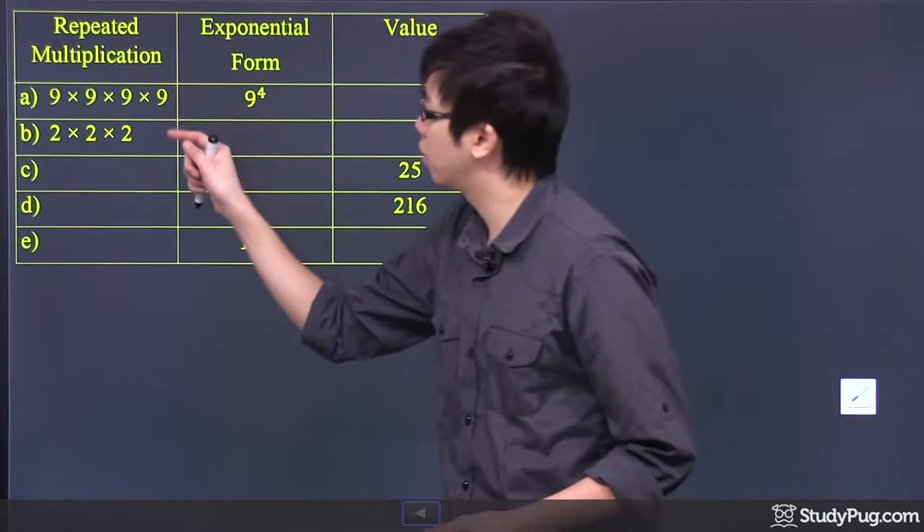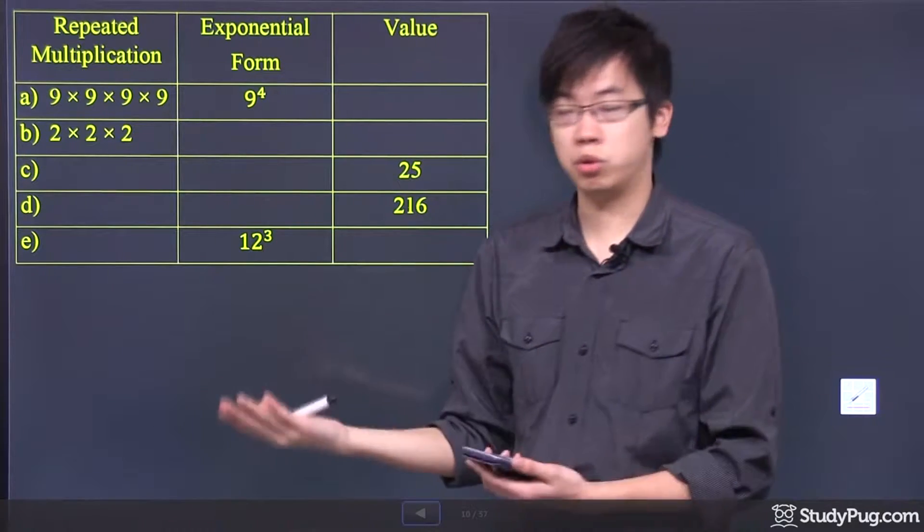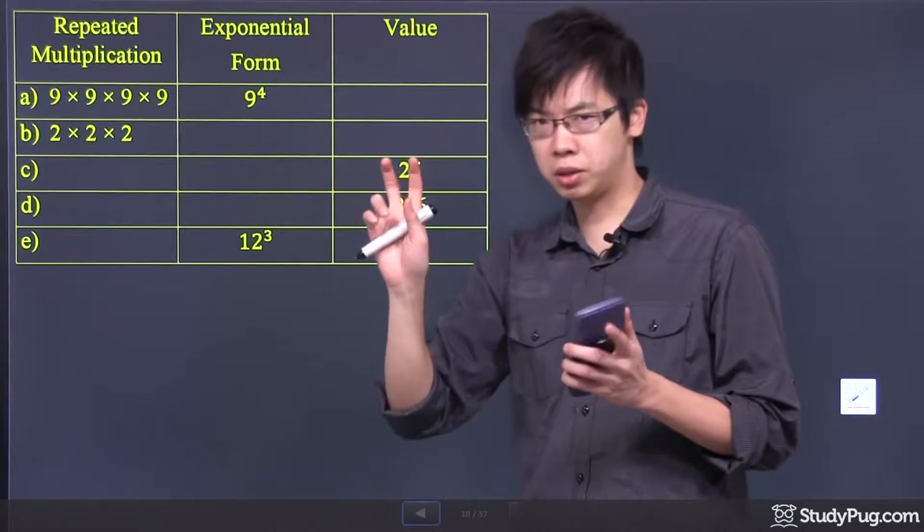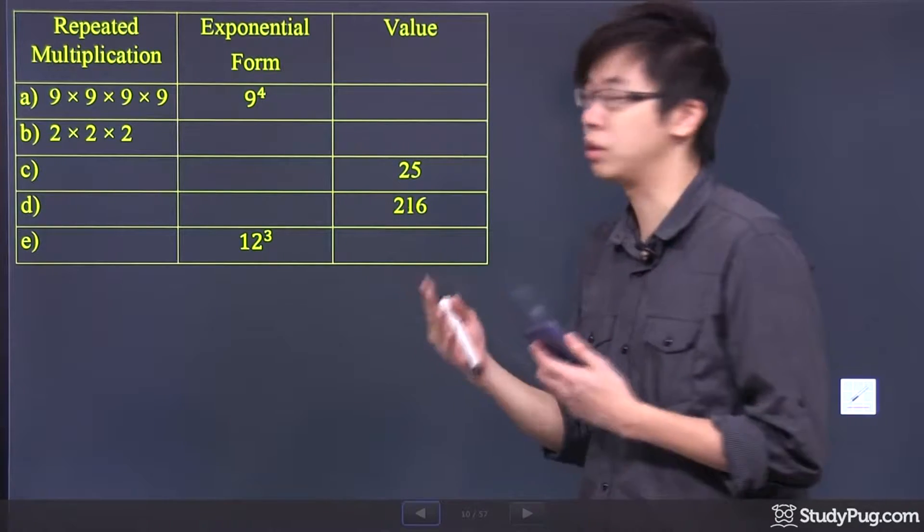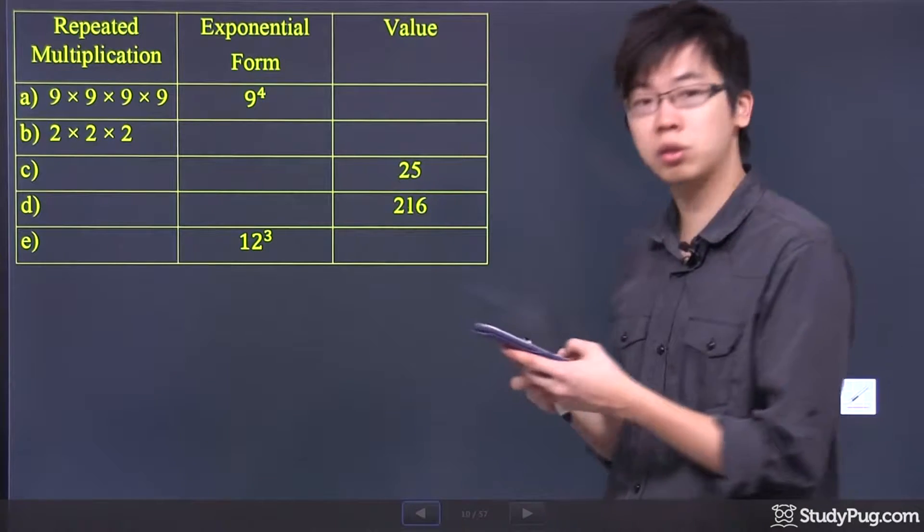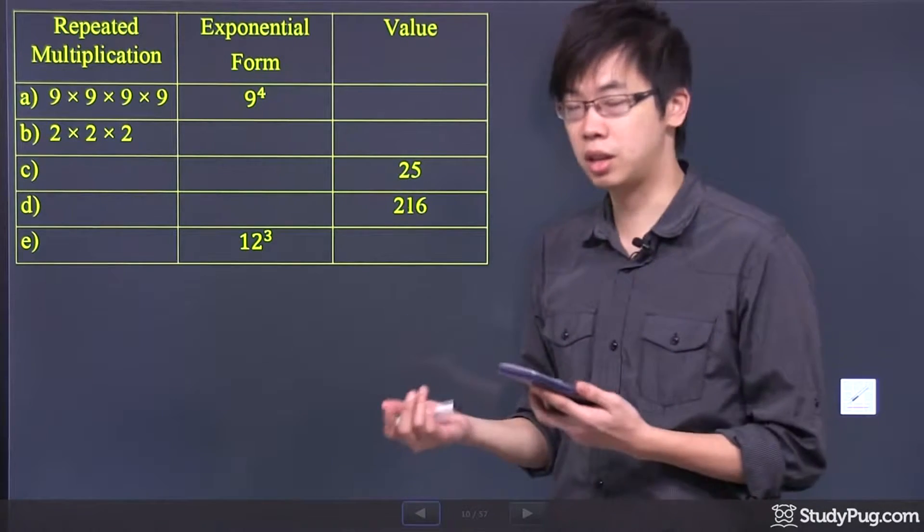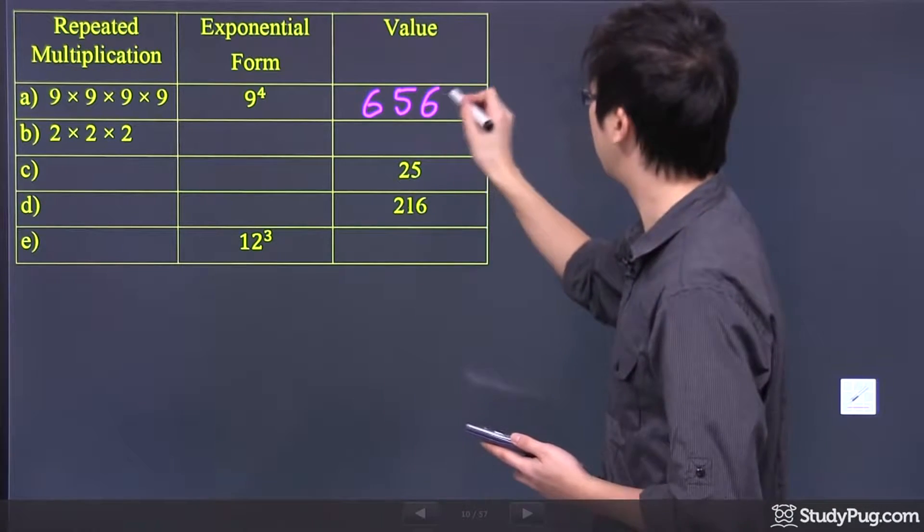What we have for the first part right here is that we got 9 times 9 times 9 times 9. But we can also change into the exponential form, which is 9, the base number, raised to the power of 4, that means it happens 4 times. Now, if you're going to calculate the value for that, it will be 9 to the power of 4, and we got ourselves 6,561 right there.